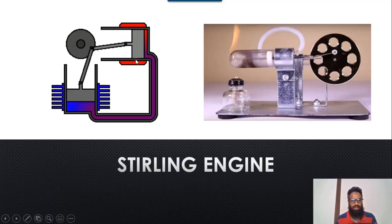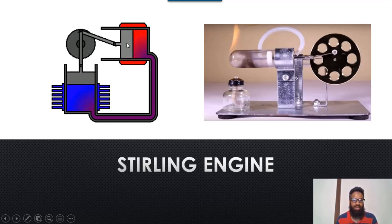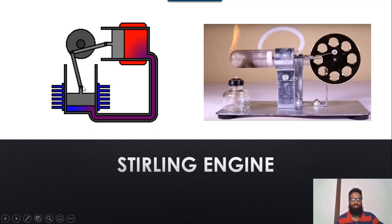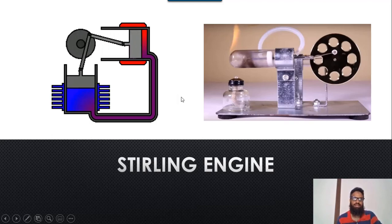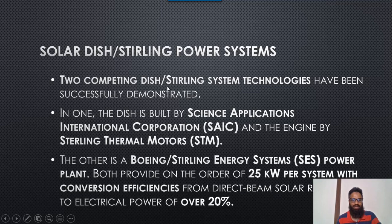Here is the basic demonstration of the Stirling engine: when heat is applied, it expands, and when it expands it starts rotating and producing mechanical motion, and that mechanical motion is converted into electricity.